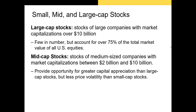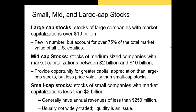Next we have mid cap stocks — firms with market caps between about 2 billion and 10 billion dollars. Mid caps are seen as having more room for capital appreciation than large cap stocks, and because they're less diversified they typically also have higher return volatility. Finally, small cap stocks are companies with market caps of less than 2 billion dollars. Historically small caps have outperformed large cap stocks in terms of returns — hence the size anomaly — but the problem is they're less liquid and have more return volatility than large or mid cap stocks.